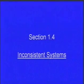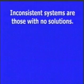This is section 1.4, where we're learning all about inconsistent systems. If you think back to section 1.2, we learned about unique solutions. In 1.3, we saw infinitely many solutions. And in 1.4, we're going to see what happens when there's no solution, which is an inconsistent system.